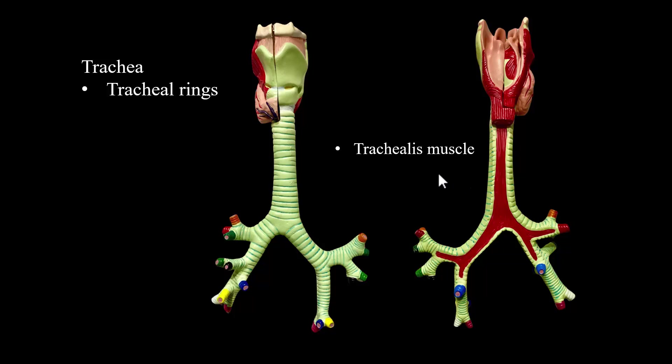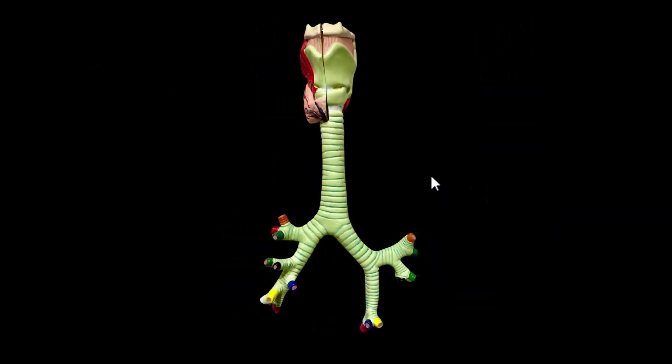The trachealis muscle. As the trachea divides, right in the crotch area is the carina. The carina is a very sensitive area. If you accidentally inhale something and it hits the carina, or if you're suctioning a patient and the catheter hits the carina, they're going to have an explosive cough. So it's very sensitive — the carina.